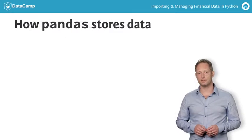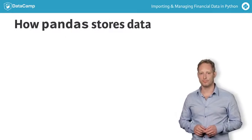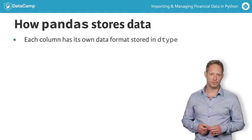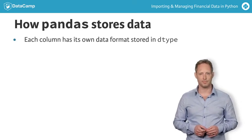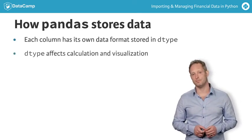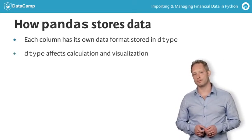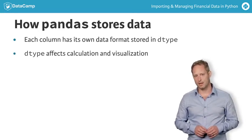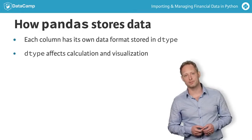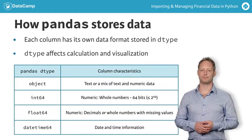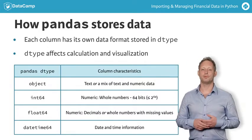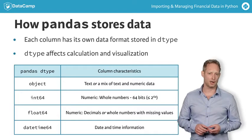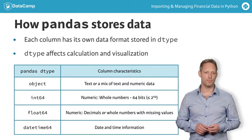Pandas assigns a different data type to each column and stores this information in a property called dtype. The dtype of a column affects how we can use its content in calculations and visualization. In particular, Pandas distinguishes between four main dtypes. The dtype object is reserved for columns with text data, or a mix of text and numeric data.